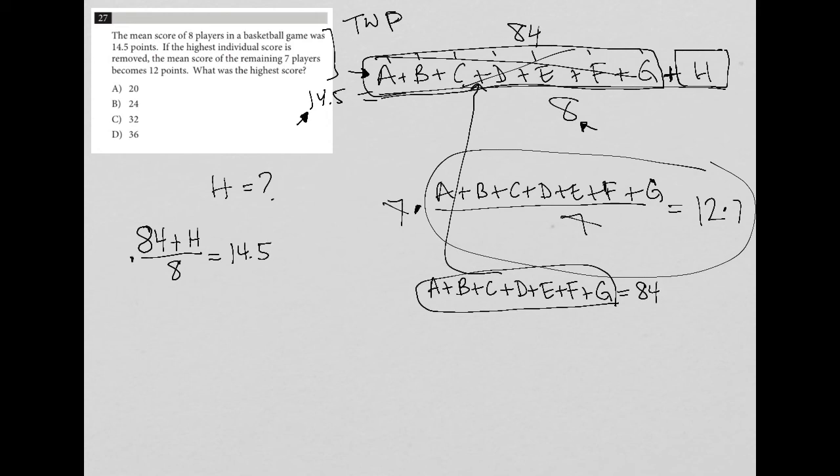So now I can multiply both sides here by 8. So 14.5 times 8, and my calculator is 116. So I have 84 plus h is equal to 116. I subtract 84 from both sides here, leaving me with h equals 32.